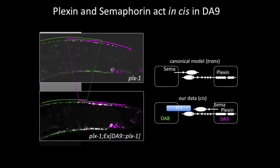Using mosaic analysis with rescuing transgenes, we found that plexin-1 functions cell-autonomously in DA9 neurons to restrict synaptic localization. Surprisingly, similar analysis of the transmembrane semaphorin, which is also required for DA8-DA9 tiling, showed that this semaphorin is also required in the DA9 neuron for synaptic tiling. Therefore, we hypothesize that plexin and semaphorin both function inside the DA9 neurons to sense an unidentified molecule on the DA8 neuron to establish the tiled synaptic domains. This is drastically different from the canonical model of plexin-semaphorin interaction, in which plexin and semaphorin often function on different cell membranes.